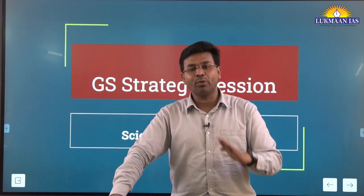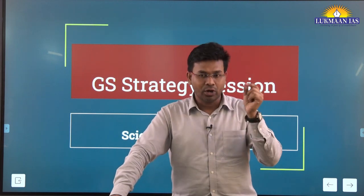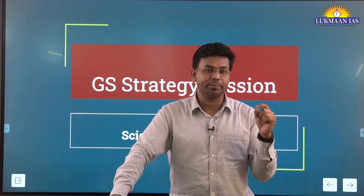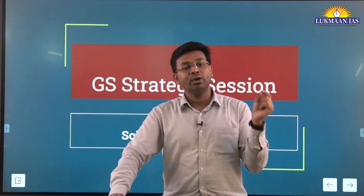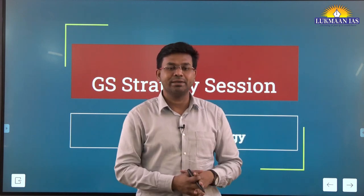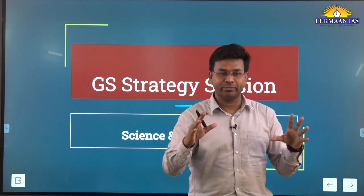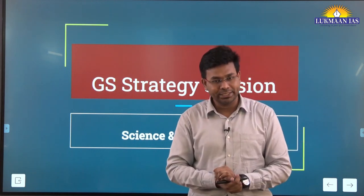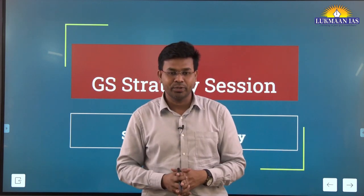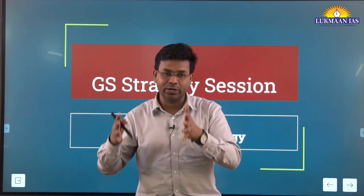If you relate the syllabus with previous year questions of prelims, you will find around 15 to 20 questions from science and technology — a weightage of around 15 percent on average. For mains, the total marks for any GS paper is 250 marks.